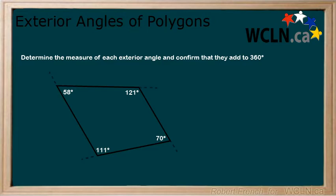For exterior angles, you should have gotten 110, 69, 122, and 59 degrees. When we add them all together, we get 360 degrees.